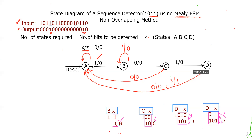Position the number of states A, B, C, D in a proper sequence manner from left to right. The leftmost state A is always considered as the reset state, also called the initial state. Now link the four states from A to D in a sequential manner, then place the number of bits to be detected between the states on the lines.